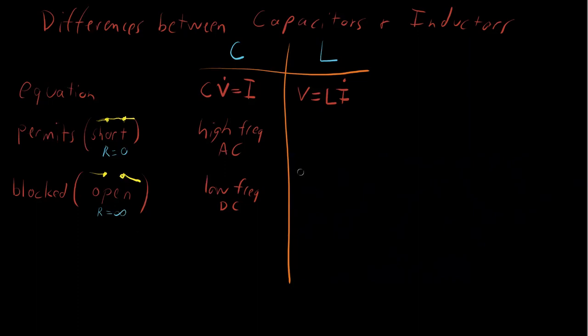Now let's make the same conclusions for an inductor. An inductor, these are basically reversed for the inductor. An inductor permits DC, permits low frequency, permits DC signals, and blocks high frequency AC signals.